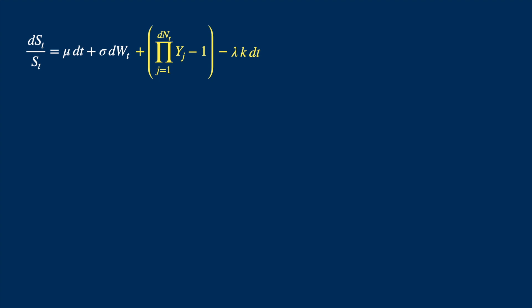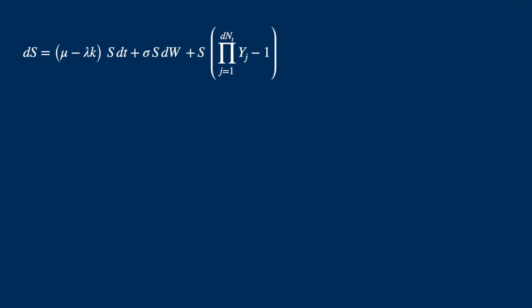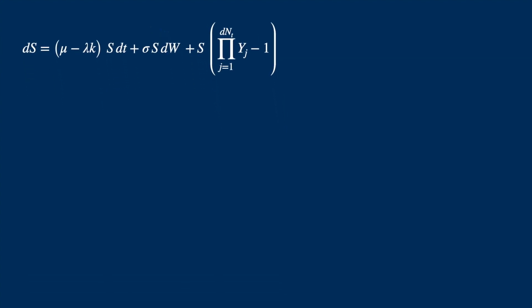We can combine the dt terms and also shift S to the right hand side. And now it is as good as it can get for the application of Ito's Lemma. We know the Ito's Lemma in its basic form. If f is the function of S, then its differential is equal to first derivative times dS plus half the second derivative times dS squared.